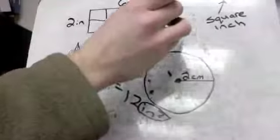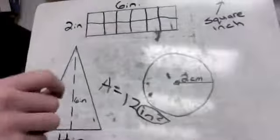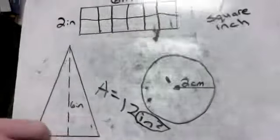Perimeter is like a straight line distance. Like if I was to walk around here. Area actually means how many of these squares can fit inside of it.